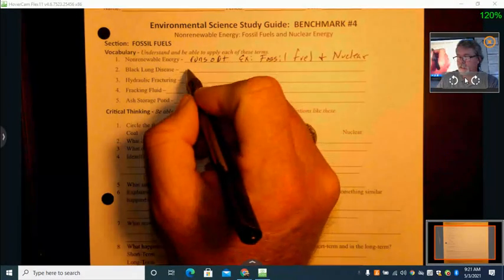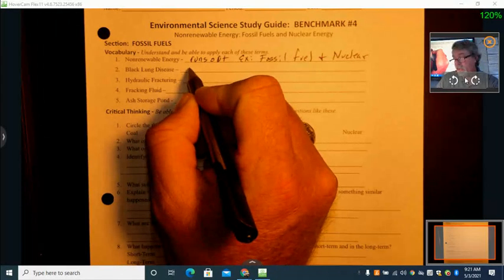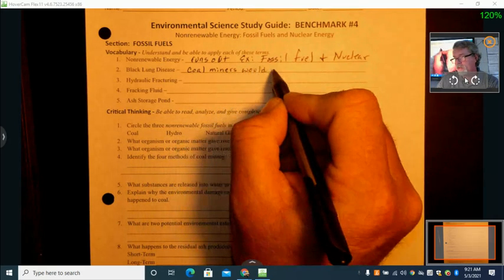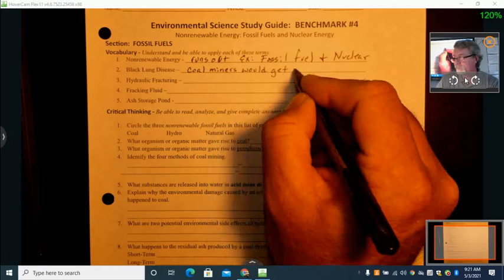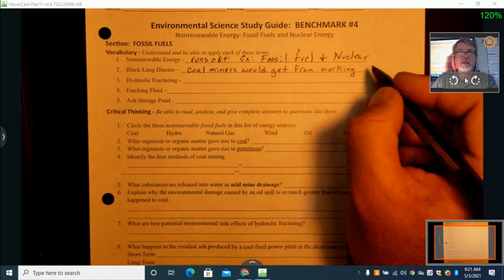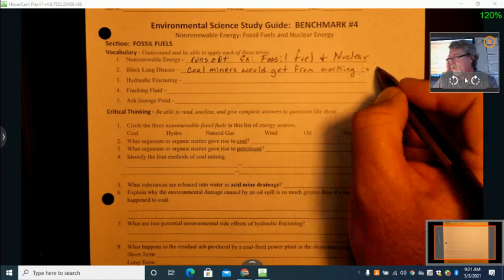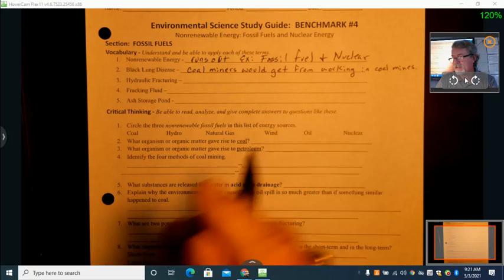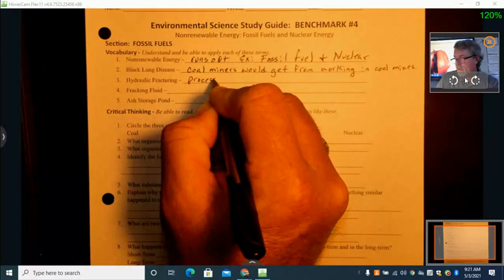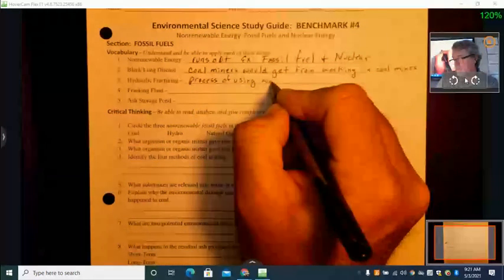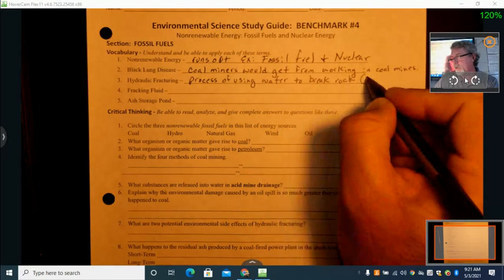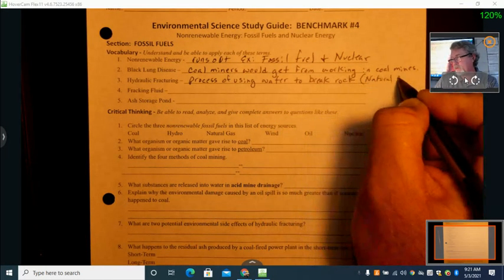All right, black lung disease is a lung disease for coal miners. They would get this disease from breathing in too much from working in the coal mines. You don't need to know a lot about it except it's a problem of working in coal mines. One of the negative aspects. Hydraulic fracturing is process of using water to break rock. This is for getting natural gas.